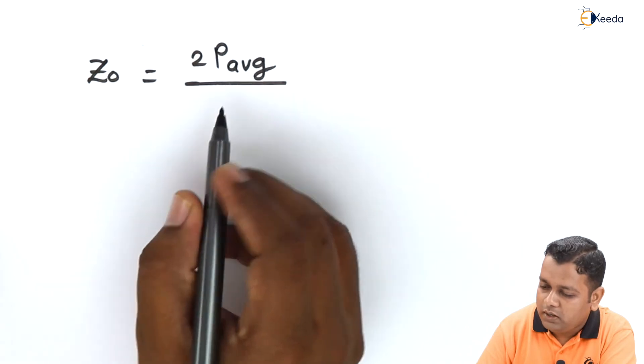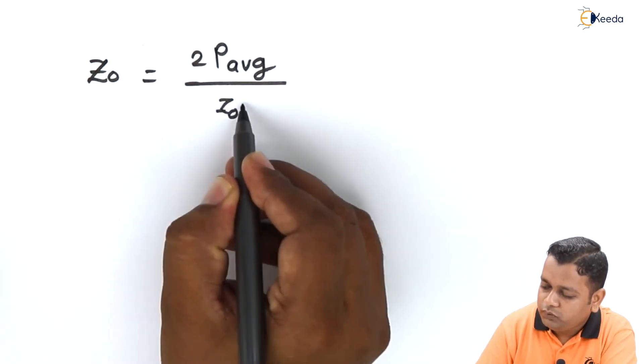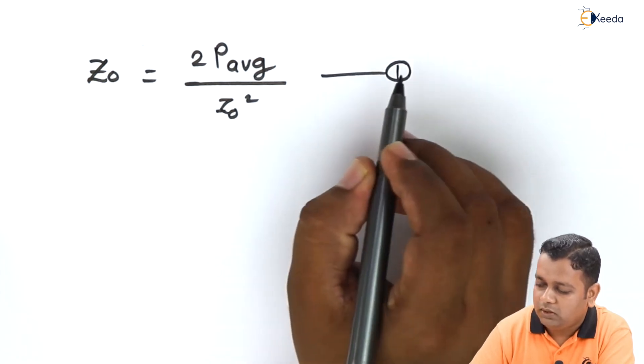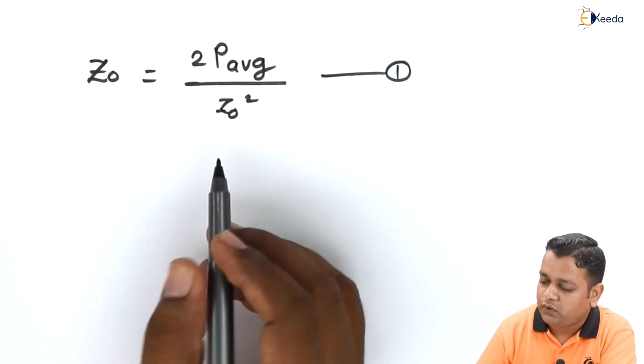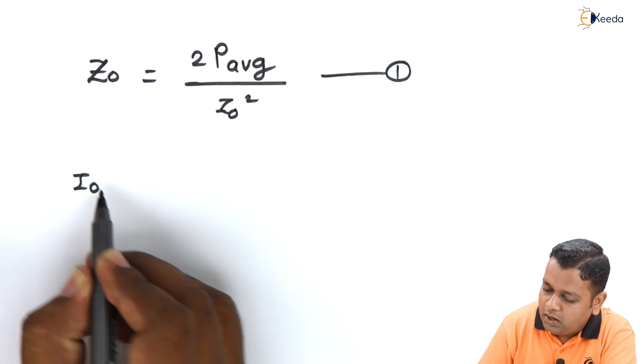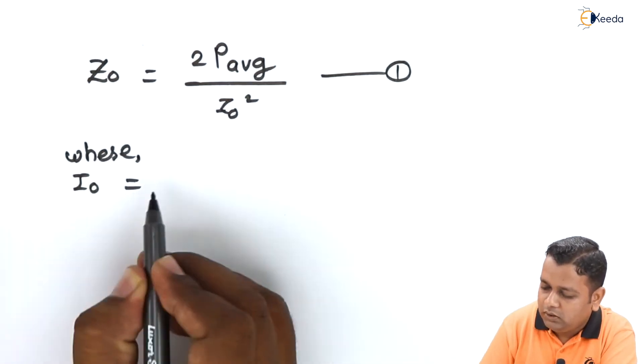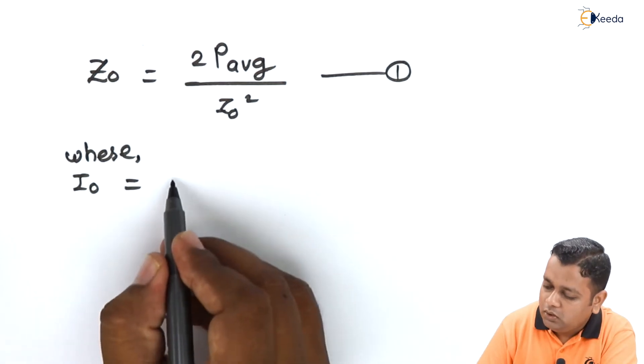Let us say this is equation number one. In this equation we have a mention of I₀, where the meaning of I₀ is the total amount of peak current.